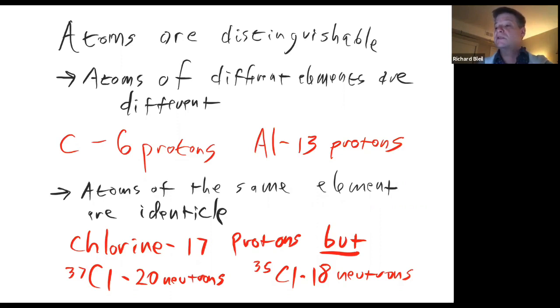Carbon has six protons. Aluminum has 13 protons. Because the number of protons are different, the elements are different, and the chemistry of these elements are very different as well.